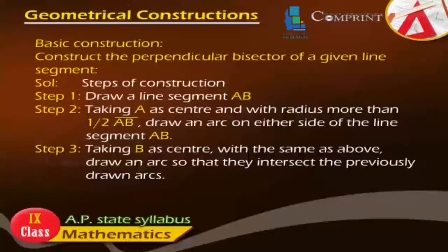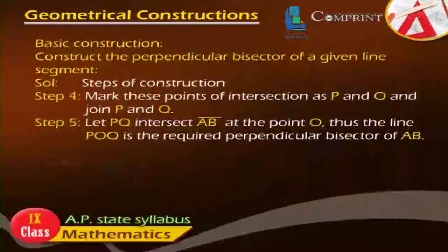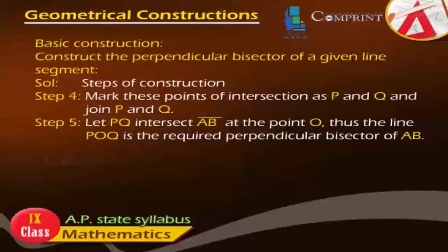Step 3: Taking B as center with the same radius as above, draw an arc so that they intersect the previously drawn arcs. Step 4: Mark these points of intersection as P and Q and join P and Q. Thus, the line PQ is the required perpendicular bisector of AB.